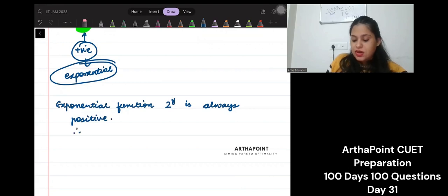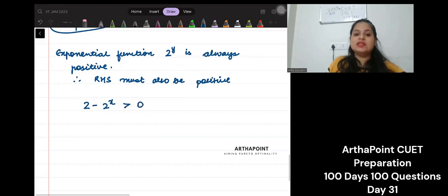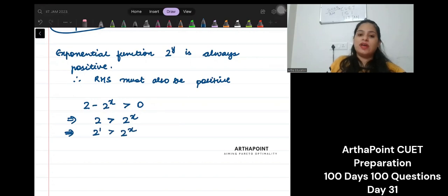Therefore, RHS must also be positive. What do we get? We get that 2 minus 2 to the power x is greater than 0. This implies 2 is greater than 2 to the power x. This implies 2 to the power 1 is greater than 2 to the power x.